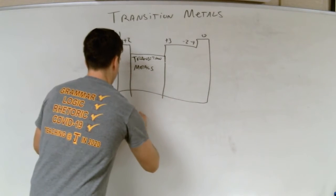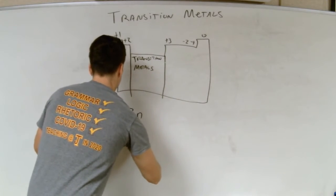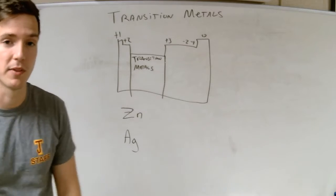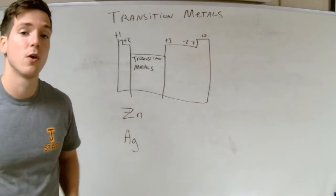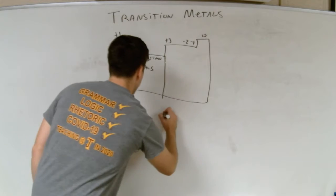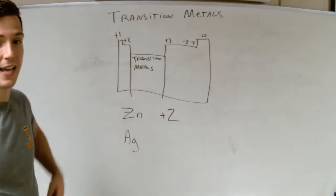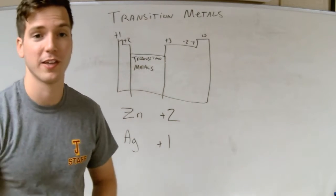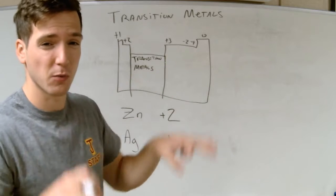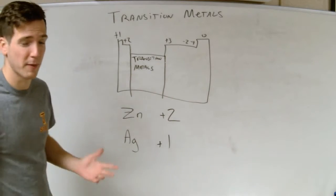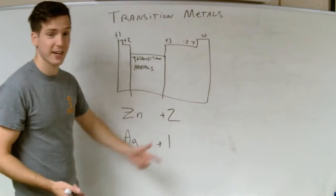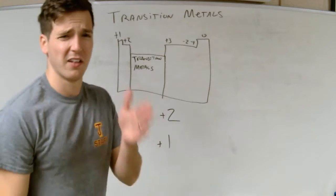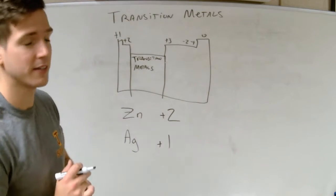Those two exceptions are zinc and silver. Feel free to write this on your periodic table. Zinc always has a plus 2 charge, and silver always has a plus 1 charge. Those are the only transition metals with a fixed charge in that middle rectangle. The way I remember it: Z looks like a 2, so zinc is plus 2. And silver is always plus 1 — its symbol Ag has an L that looks like a 1, if you want to use that.